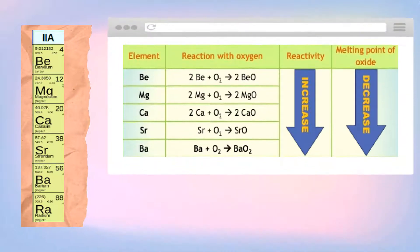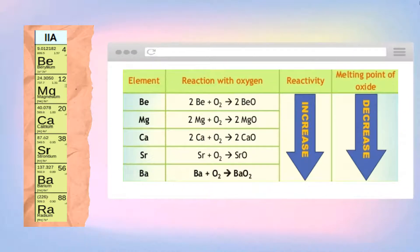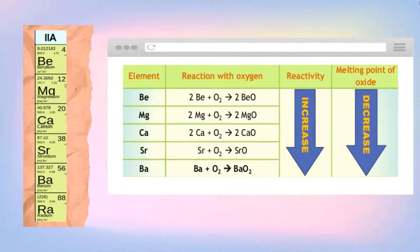In group 2, we start from beryllium and end at radium. However, the graph only shows the reactions up to barium, as the reaction between radium and oxygen is very explosive.